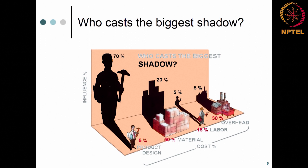This is a slightly outdated picture, generated at least a couple of decades ago. The percentage numbers might vary today — labour is sometimes larger than material depending on the field, and overhead may accordingly decrease or increase. The y-axis here represents influence, and the impact is shown by the shadow in the chart, illustrating who casts the biggest shadow.